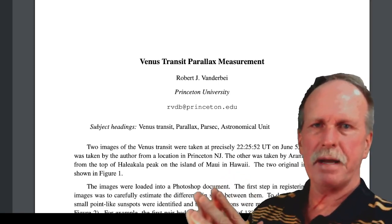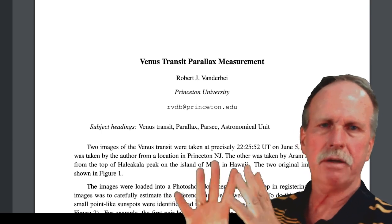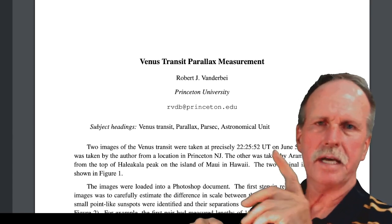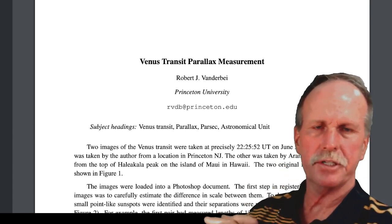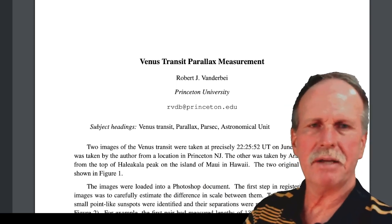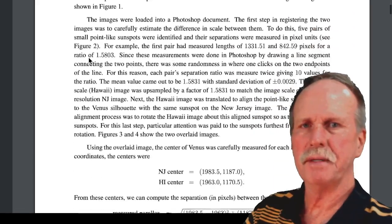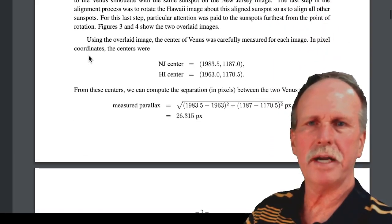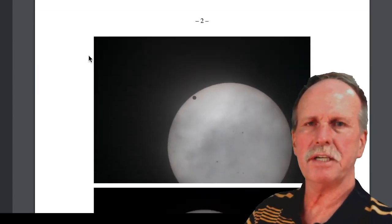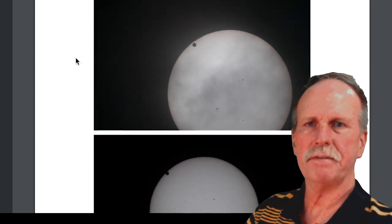In closing, I'd like to go over this paper by Robert J. Vanderbeye. It was a very interesting paper because it had all of the mathematics in it, and it sparked my interest in looking at the transit of Venus. Dr. Vanderbeye was in Princeton, New Jersey, in the North Parking Garage, and his associate was on a mountaintop in Hawaii, and they took these two very interesting photographs. Here is the Princeton University photograph, and here's the photograph from Hawaii.